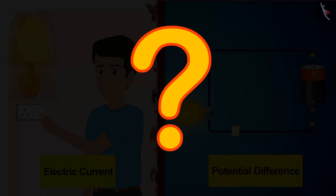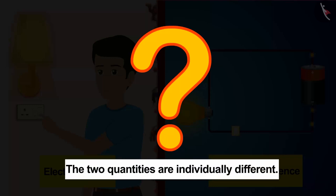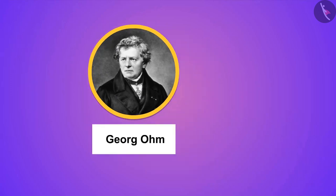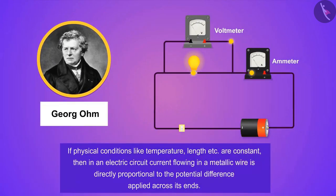The definition says that the two quantities are individually different. But a German physicist named Georg Ohm learned from his experiment that there is a relation between electric current and potential difference. Ohm states that if physical conditions such as temperature, length, etc., are constant, then in an electric circuit, the electric current flowing in a metallic wire is directly proportional to the potential difference applied across its ends.